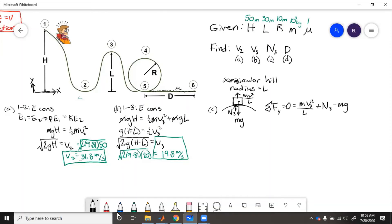direction of the hill, which is going to be mv squared over l plus n3 minus mg. So then we rearrange and solve for n3. n equals m times g minus v squared over l. We put numbers in here. That equals 1000 times 9.81 minus 19.8 squared over 30. n equals negative 3270 newtons.